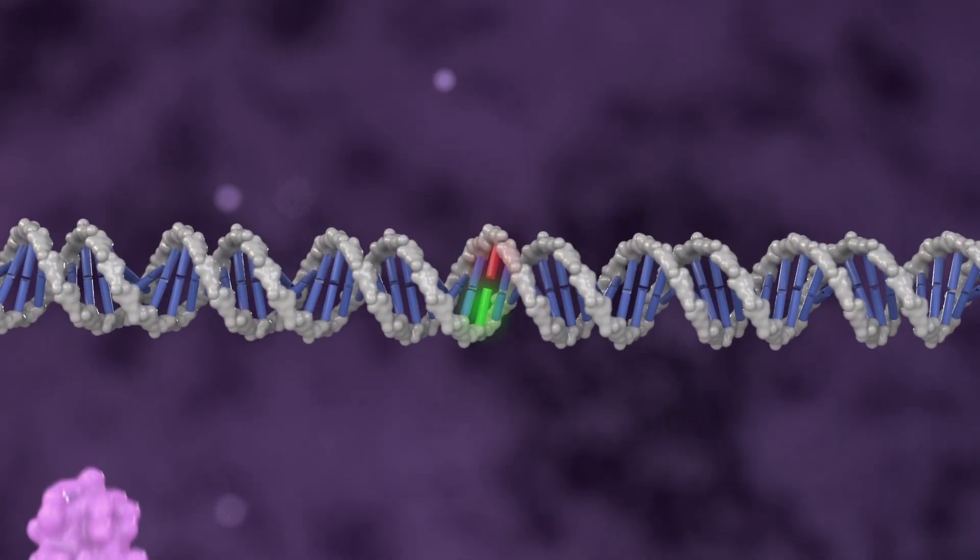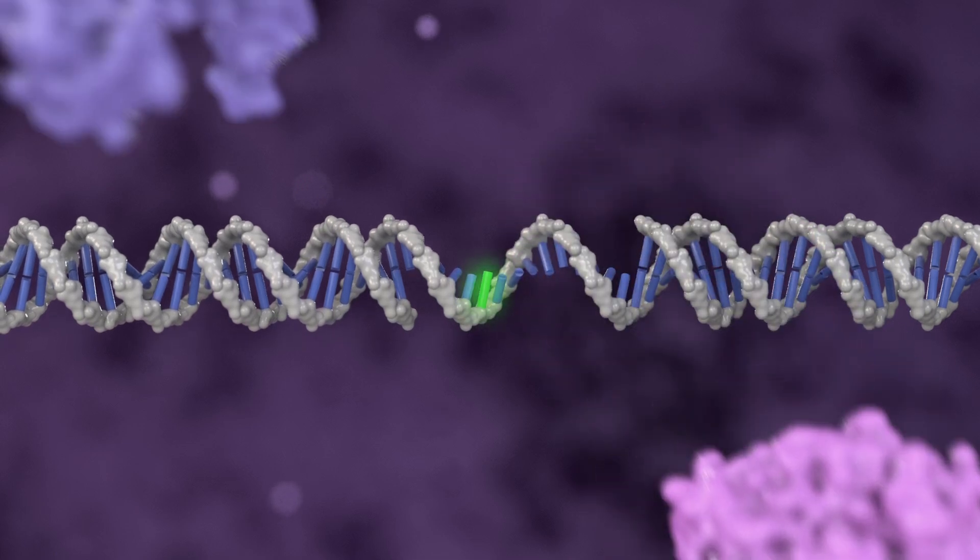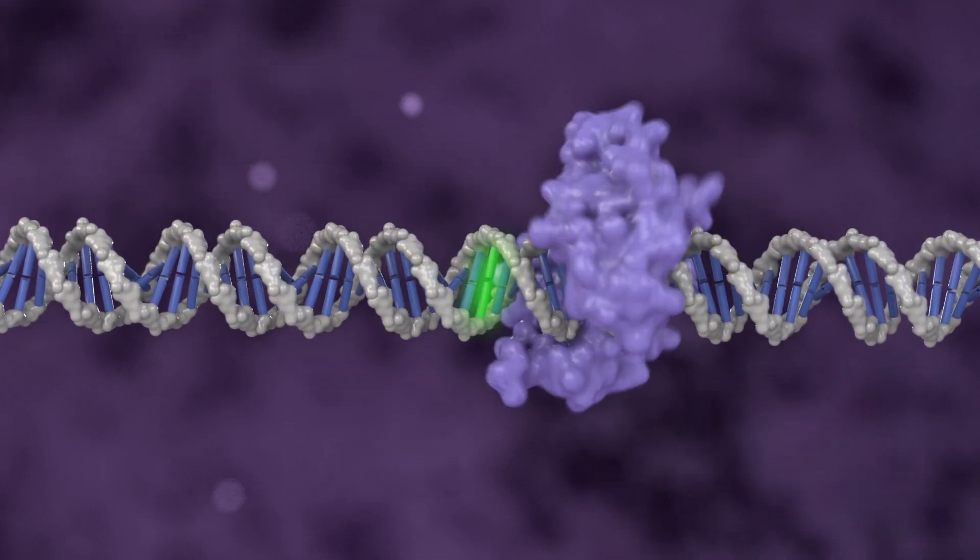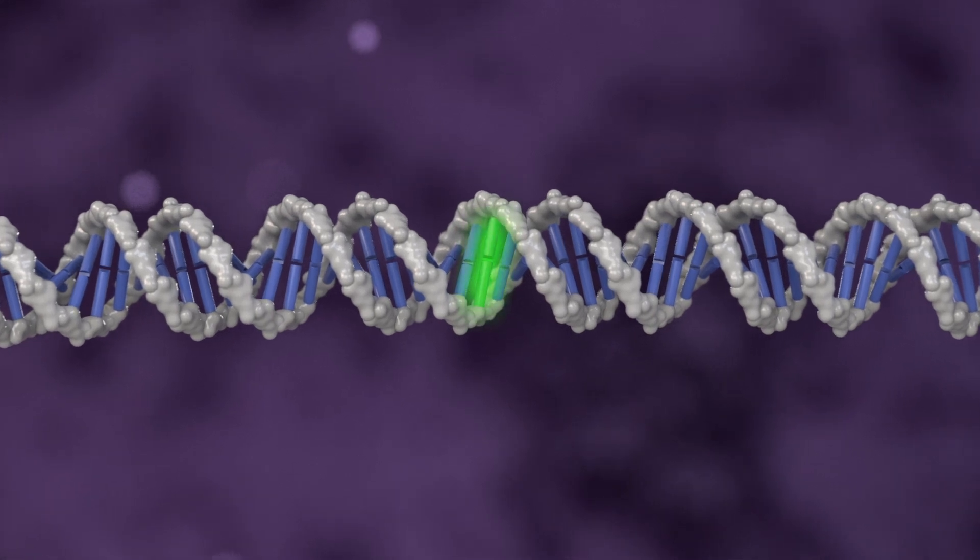Additional DNA repair enzymes remove the other mutated DNA strand and replace it using the corrected strand as a template, resulting in the correction of both strands of DNA.